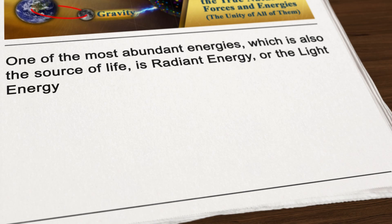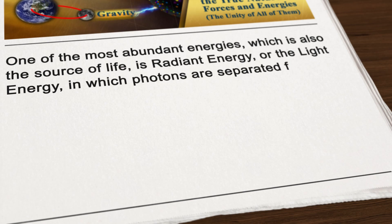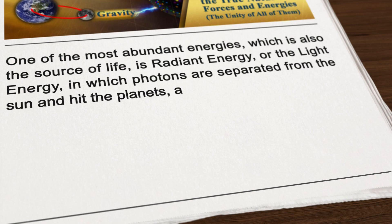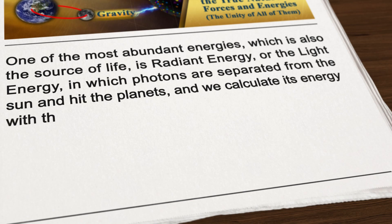One of the most abundant energies, which is also the source of life, is radiant energy or light energy, in which photons are separated from the sun and hit the planets. We calculate its energy with the following equation.